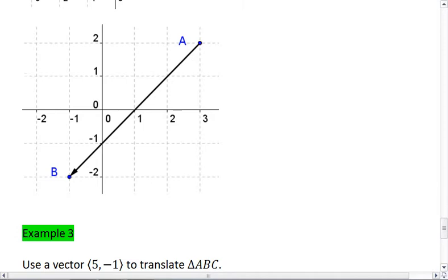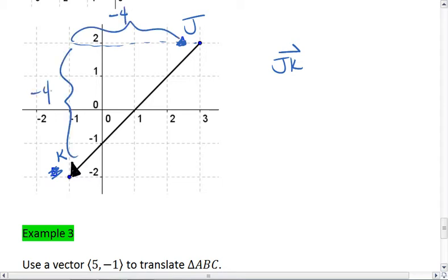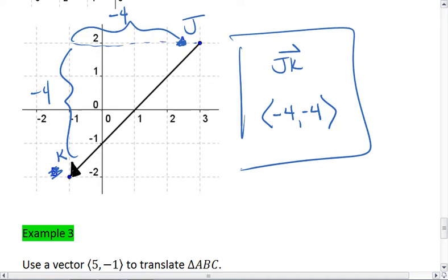Let's look at this next one. We're going to rename it J, K. I'm going from J to K, so my vector's name is JK. I'm going four units to the left and then four units down, which makes my vector component ⟨-4, -4⟩. Please be careful that if you're moving down or to the left, you make sure that component has a negative sign on it.